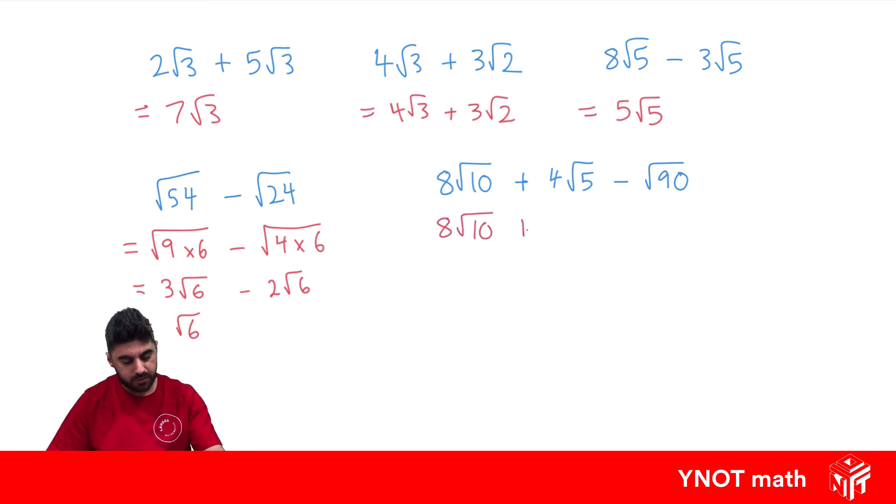We'll have 8 root 10 plus 4 root 5. 90 can be written as 9 times 10 because 9 is a perfect square number. So we get 8 root 10 plus 4 root 5 minus root 9 is 3, so we have 3 root 10.